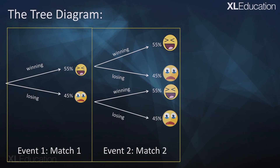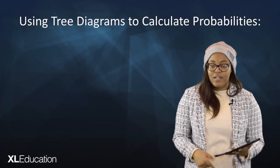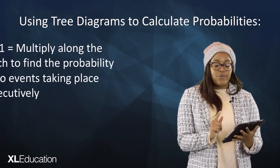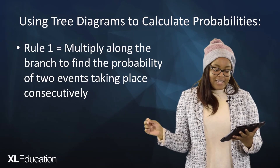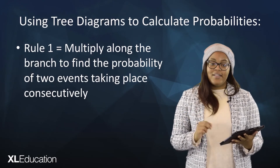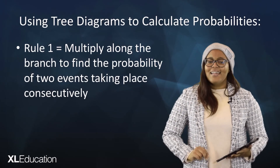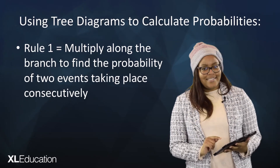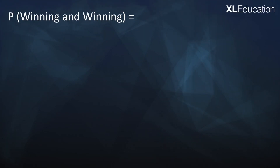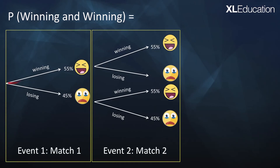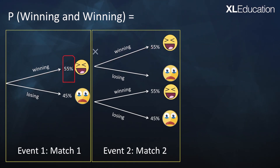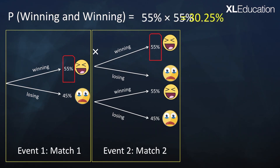This is how you draw a tree diagram, but how do we use it to calculate probabilities? We need to learn a couple of rules. The first is that if you have multiple events taking place, you multiply along the branch to find the probability of those events taking place one after the other. For example, the probability of winning match one and then winning match two is 55 percent multiplied by 55 percent, which gives us 30.25 percent.